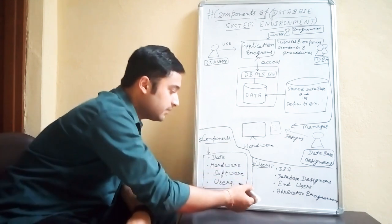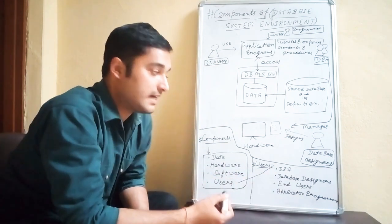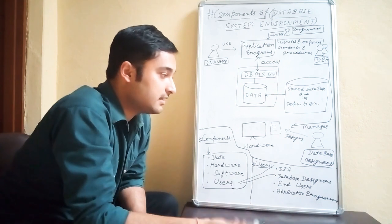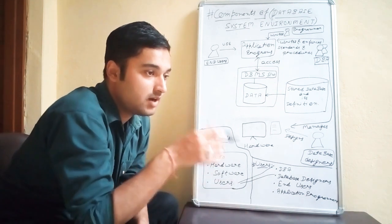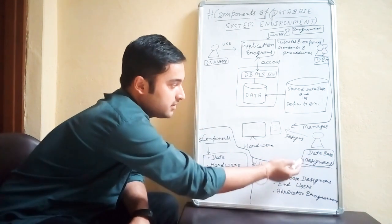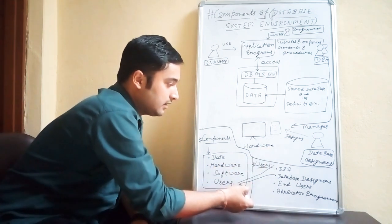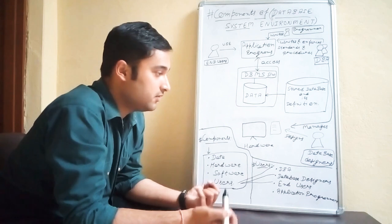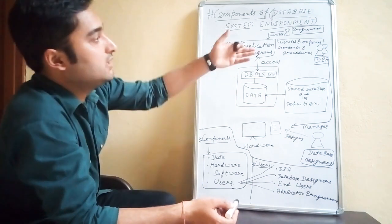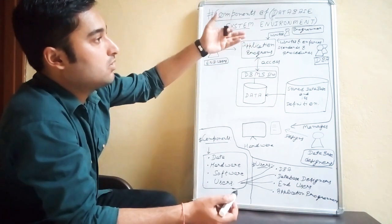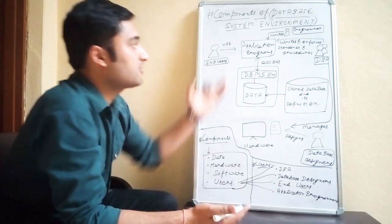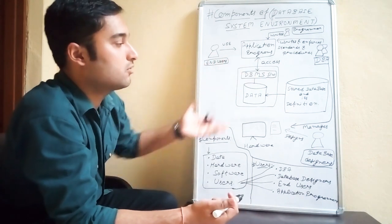Users are also four kinds in the database environment. The first one is DBA, which is database administrator. The second one is database designer, who actually designs the database — deciding what kind of design we want to manage our data. The third one is the end user, like us, who uses the database system. The fourth one is the application programmer, who actually writes the application programs to make changes inside the database system.